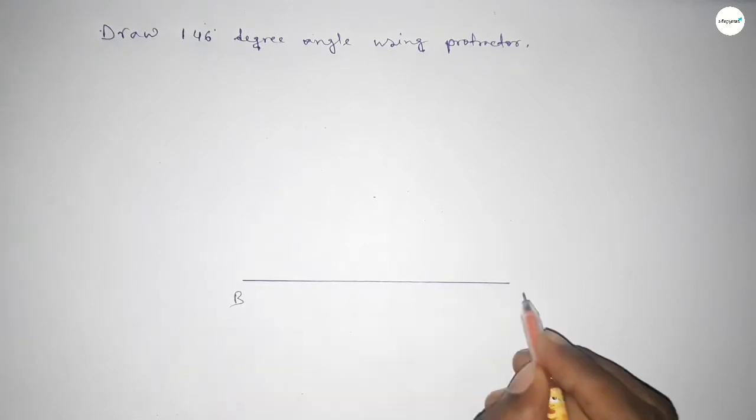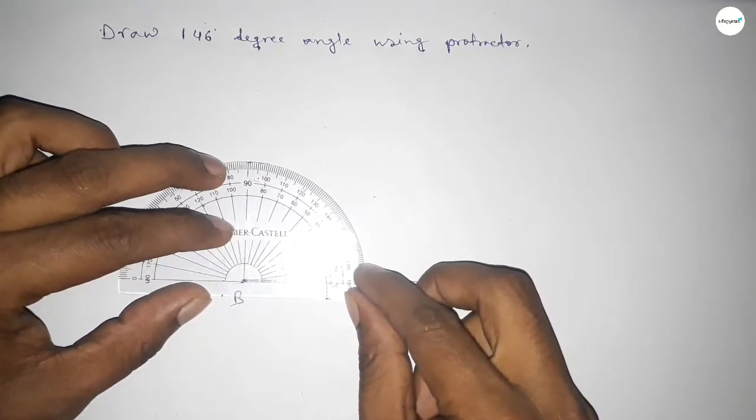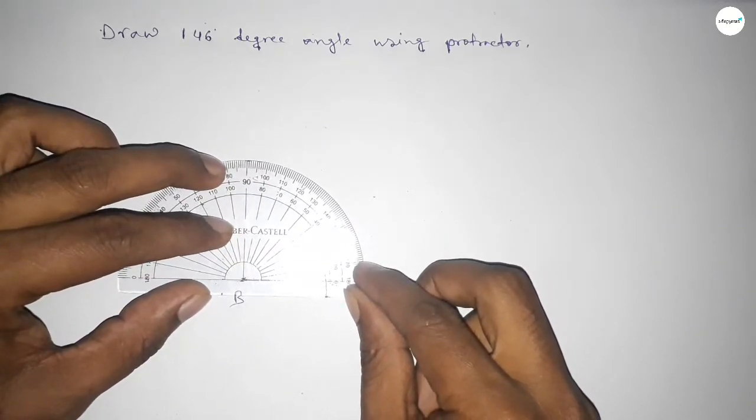Next, taking here point B and here point C. Now putting the protractor on point B perfectly.